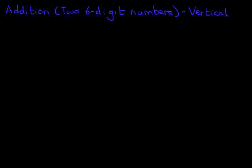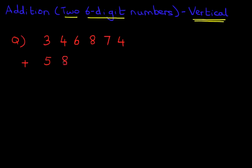Hello and welcome to the tutorial on addition. In this tutorial we will learn how to add two six-digit numbers using the vertical format. So let's have a look at the question we're going to be working through. So what is 346,874 plus 584,366?